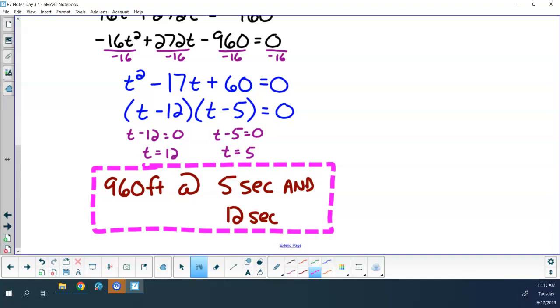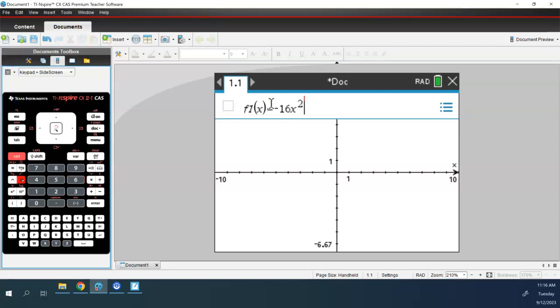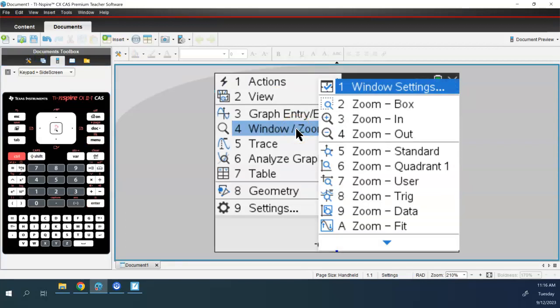Let's graph this one now. So you can do the control doc to add a new page. So we want to go negative 16. Now, I would normally say t squared, but my function is a function of x. So instead of t, I've got to put x squared. Otherwise, you're going to get a syntax error. You're not going to recognize the t value. Then we said plus 272 instead of t. We're going to put x. Now when I hit enter, I only see the first, like, half second, not even. So if I wanted to see the whole thing, I would need to adjust my window. Menu, window, zoom, window settings.